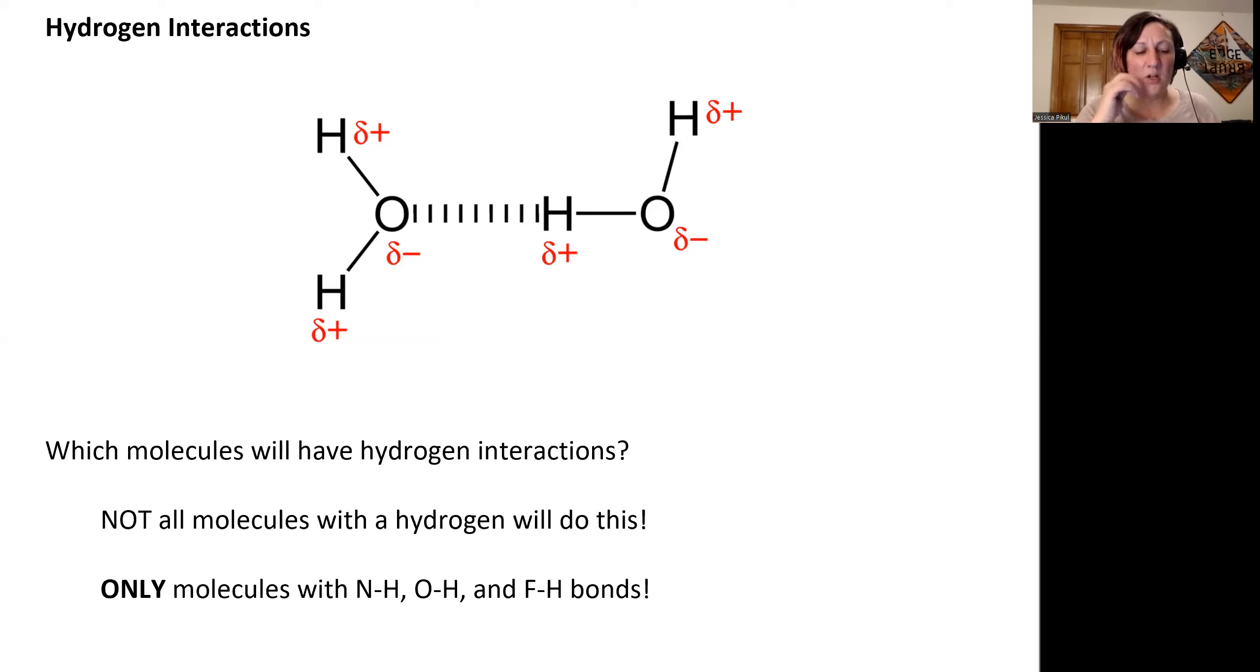These are called hydrogen interactions because these bonds that have these really large electronegativity differences all include hydrogen because it has a really low electronegativity value of 2.1.